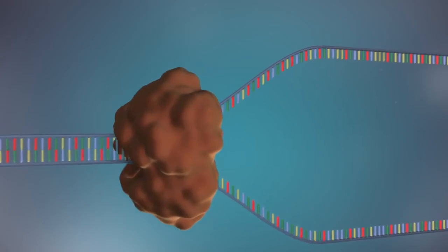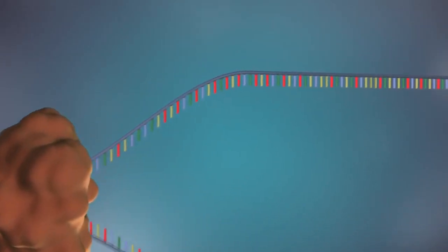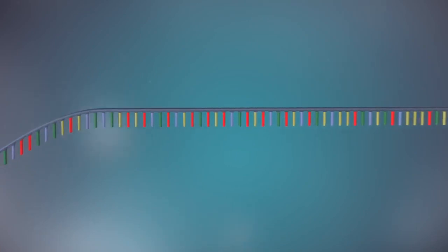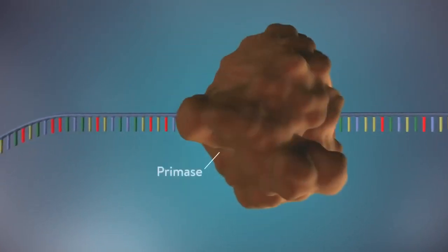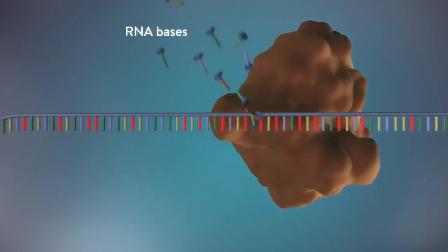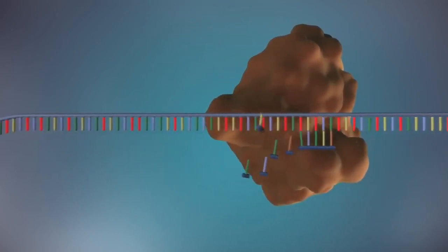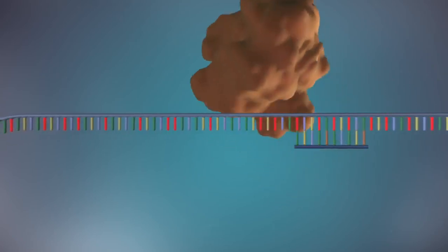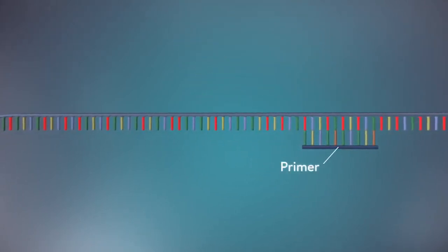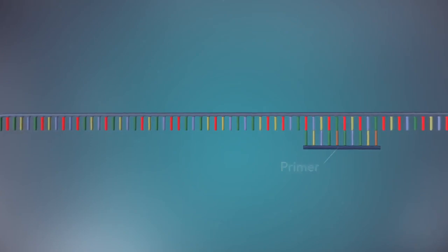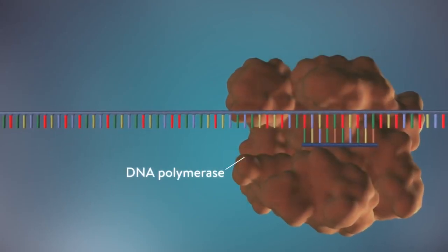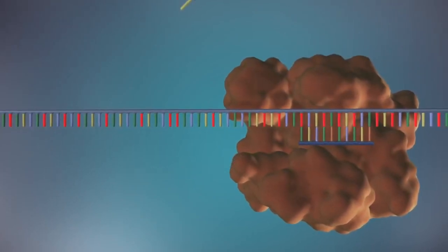The separated strands each provide a template for creating a new strand of DNA. An enzyme called primase starts the process. This enzyme makes a small piece of RNA called a primer. This marks the starting point for the construction of the new strand of DNA. An enzyme called DNA polymerase binds to the primer and will make the new strand of DNA.